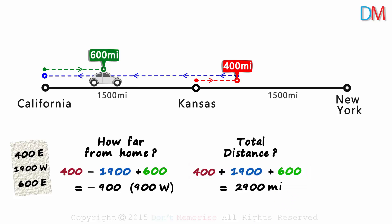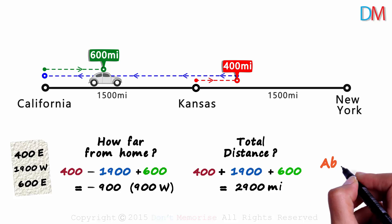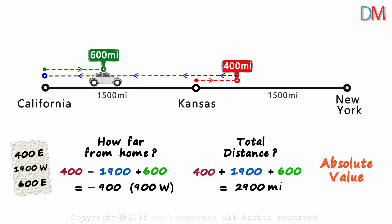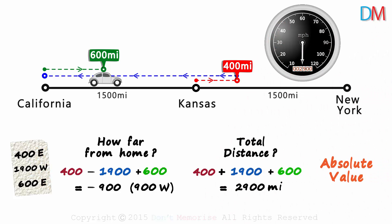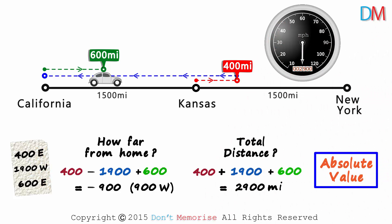Wait a moment — what exactly did we do here? What we did, unknowingly, was find the absolute value of each number. We ignored the sign and simply added the three numbers. So yes, a car's odometer uses the absolute value concept.